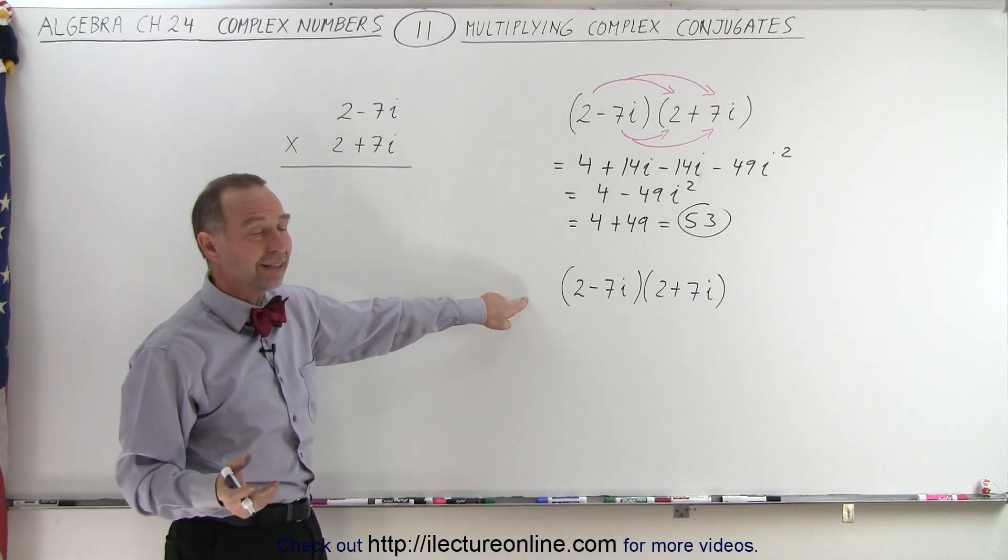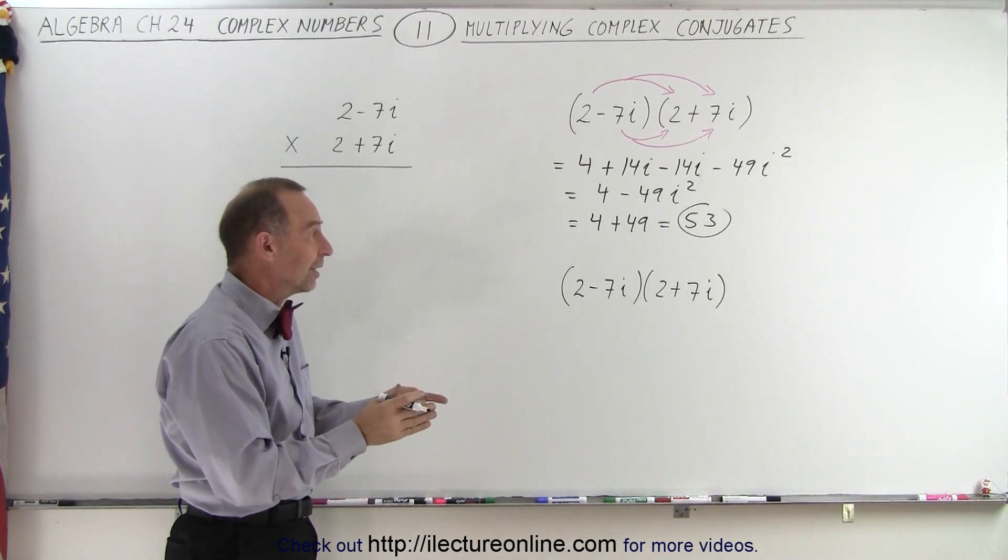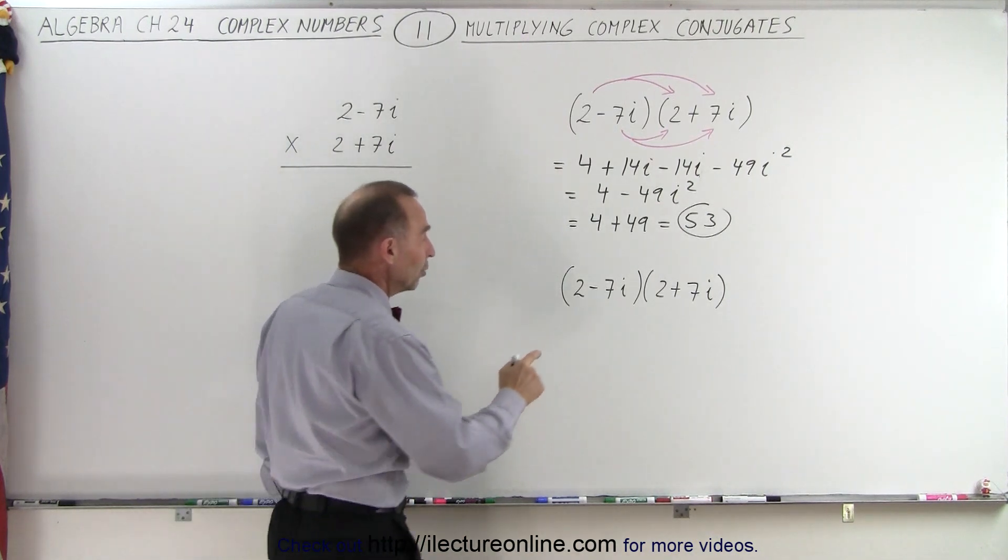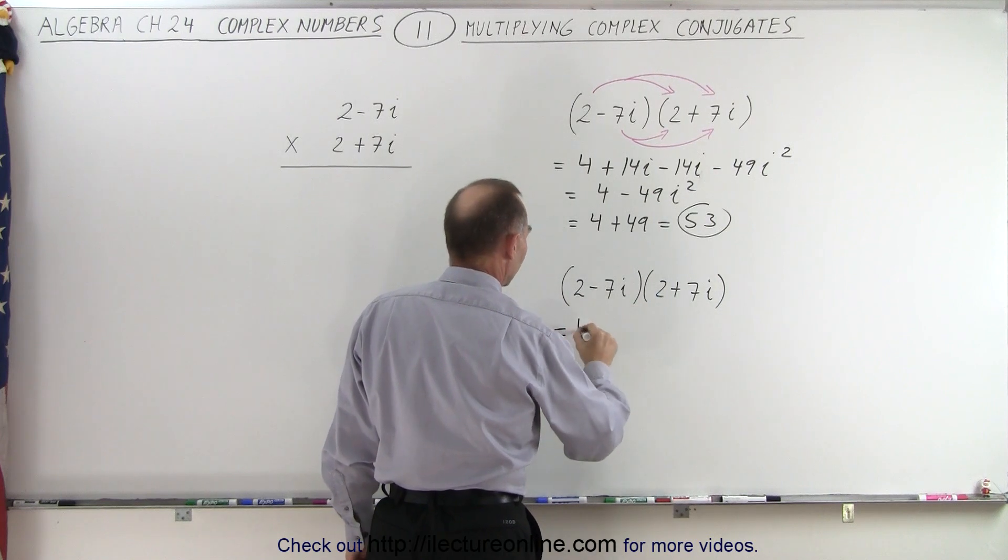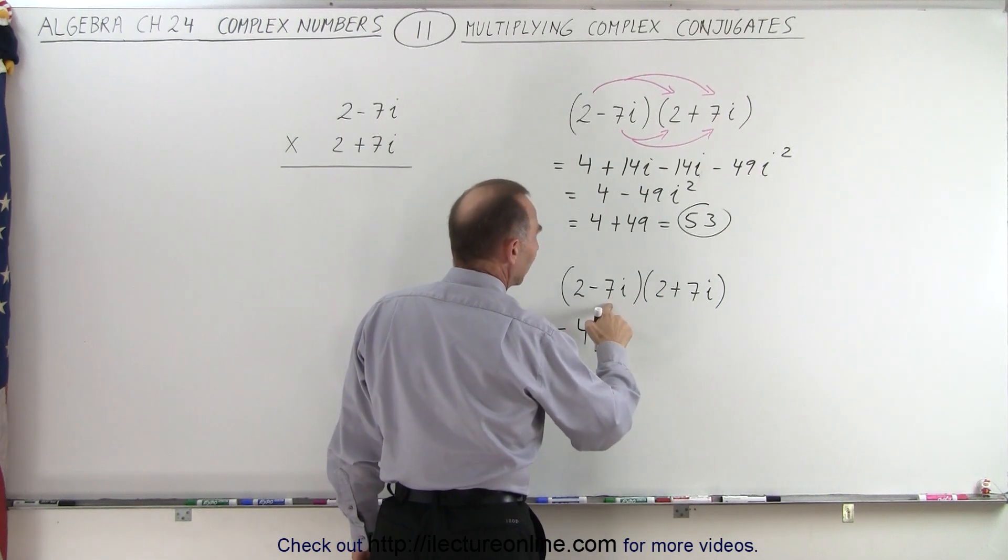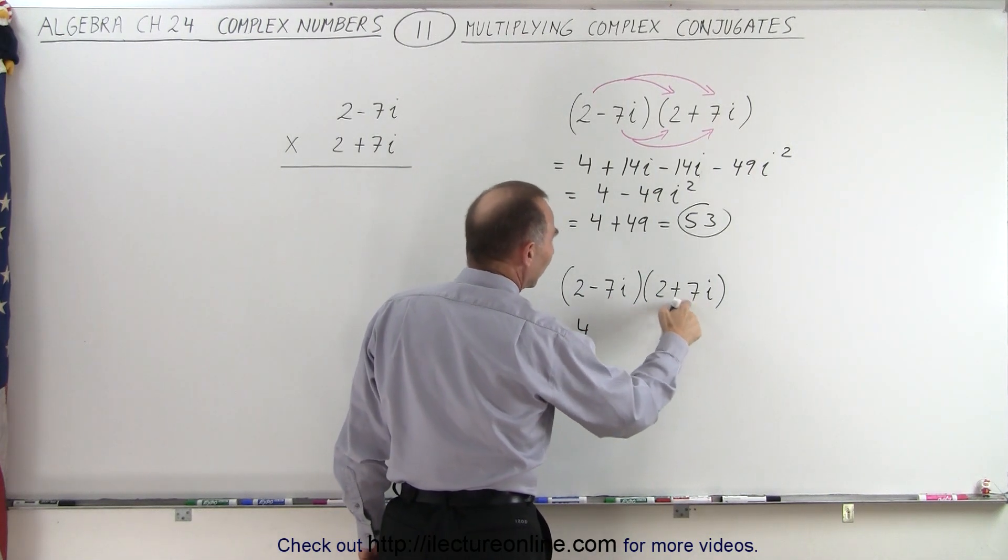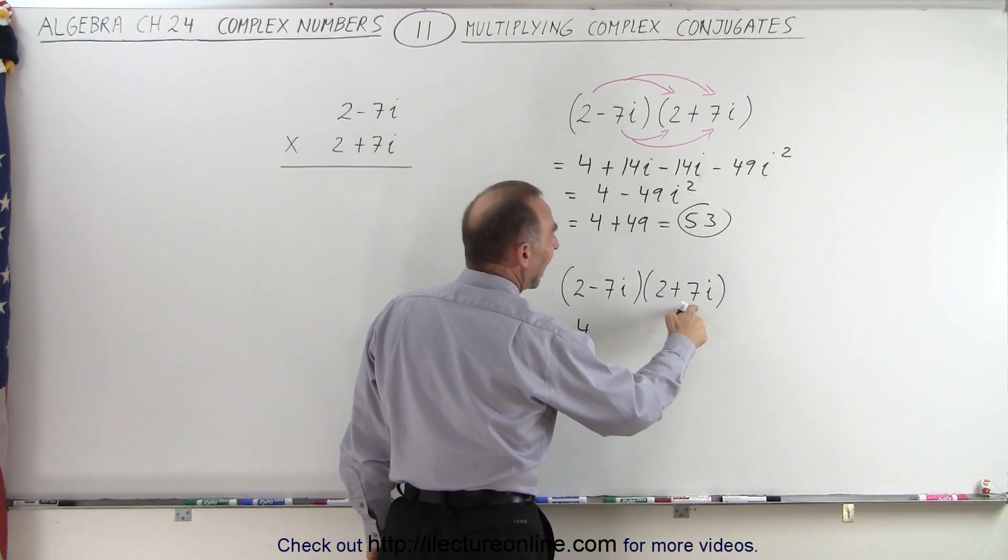So why do I have the same problem a second time? Once you realize that the middle term disappears, all you need to do is say that's 2 times 2, which is equal to 4. And negative 7i times a positive 7i is minus 49i squared. But i squared is negative 1.